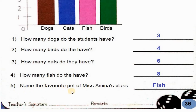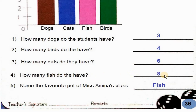Number five: Name the favorite pet of Miss Amna's class. अब Miss Amna की class के students का favorite pet कौन सा है? जो सबसे ज्यादा होगा वो ही favorite होगा. So सबसे ज्यादा — fish, क्योंکہ fish की तादाद eight है. So fish.